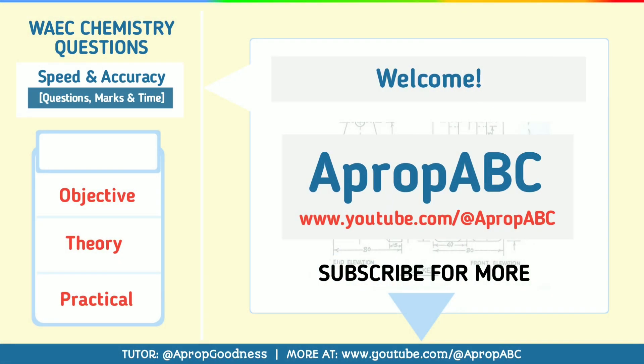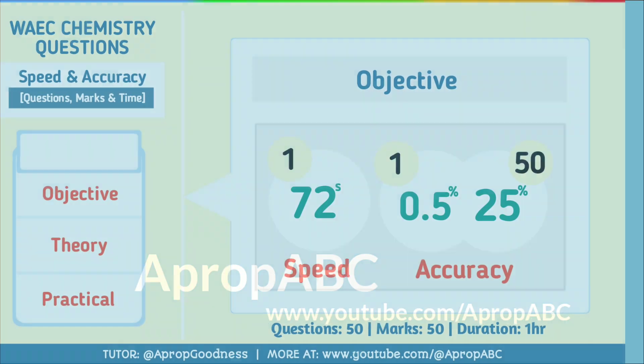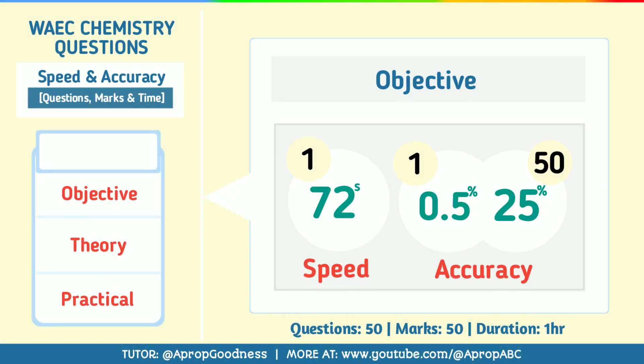Provided all things remain equal, this should be how your speed and accuracy should go. Objective questions cover one hour and amount to 50 marks for 50 questions. That means for speed, you must be as fast as 72 seconds per question. And for accuracy, if you get one question correctly, you have covered 0.5% of your total grade for that particular examination.